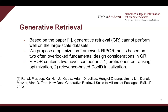In this work, we propose a novel optimization framework, RIPPLE, based on two often overlooked fundamental design considerations in generative retrieval, and for the first time make generative retrieval achieve good results on MS-Marco benchmarks, on par with several dense retrieval models. RIPPLE contains two novel optimization components: the first is prefix-oriented ranking optimization, and the second is relevance-based document ID initialization, which solve the above two considerations respectively.